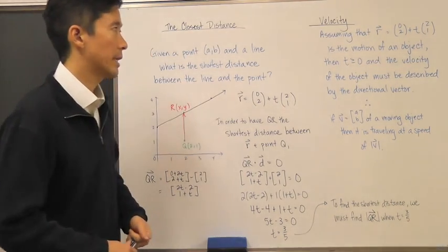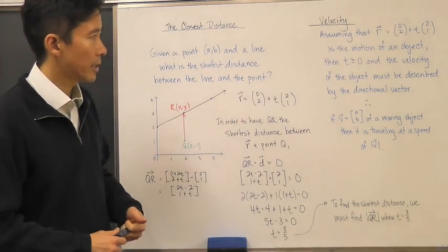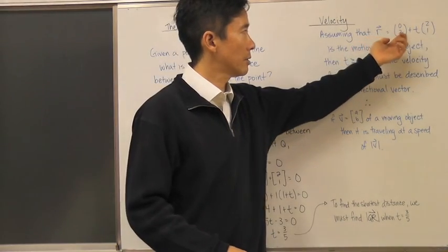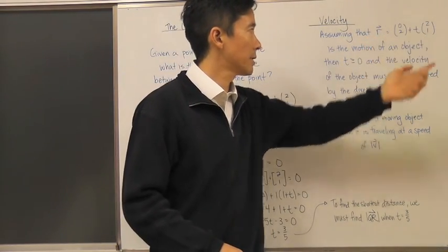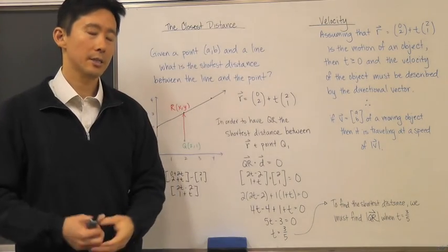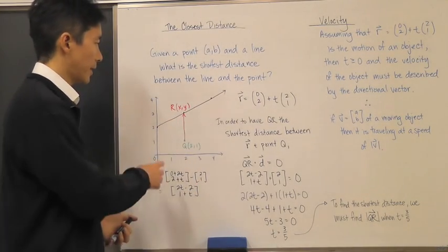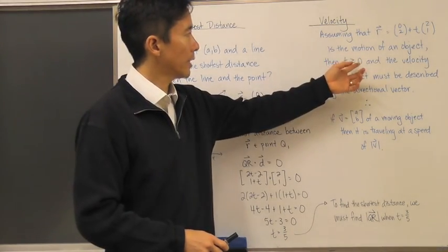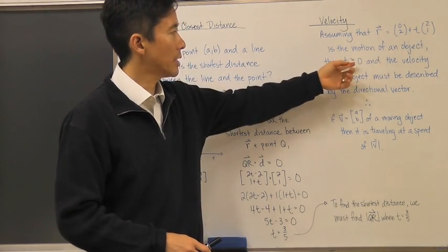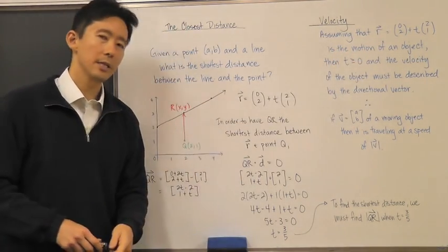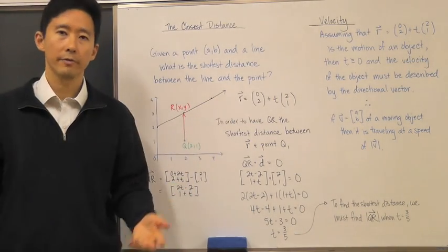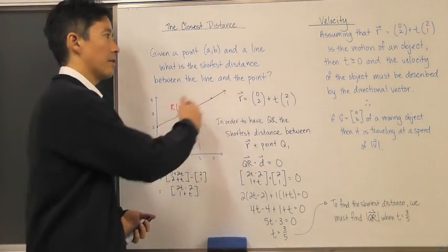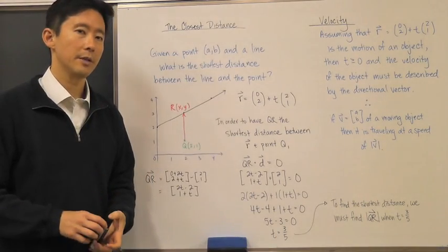We also want to look at velocity, because velocity comes into play with this same example. We can view r = (0, 2) + t(2, 1) as describing the motion of an object — say, a boat. With t ≥ 0, the object moves along that direction, and the directional vector tells you which direction it's moving and how far it travels per unit of t. Therefore you're dealing with a velocity vector.